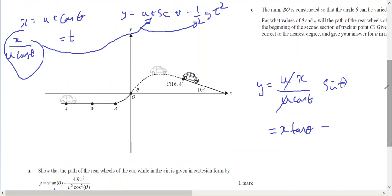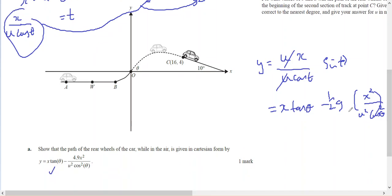Minus a half g times t squared, which will be x squared on u squared cos squared theta. And a half of g is minus 4.9 x squared on top of u squared cos squared theta, and that's exactly what that is.